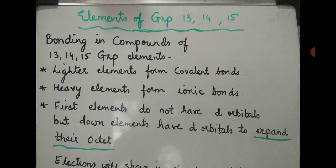Heavy elements have a high atomic number, their atomic size is also high, and outermost electrons are not easily attracted to the nucleus. Because of that, the ionization enthalpy is small. In heavy elements, the outermost electrons can be lost easily because the attraction between the nucleus and valence electrons is poor due to larger size. As these valence electrons can be lost easily, heavy elements have a tendency to form ionic bonds.